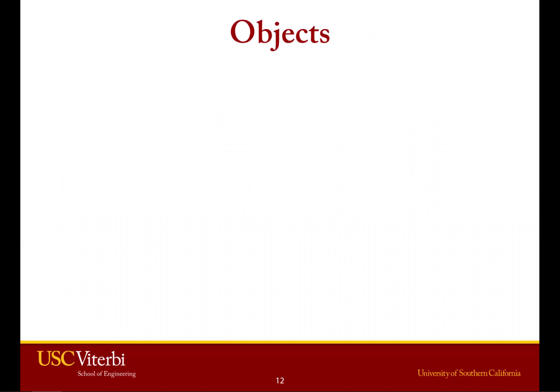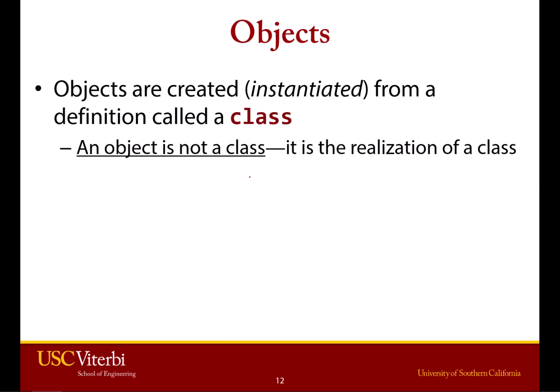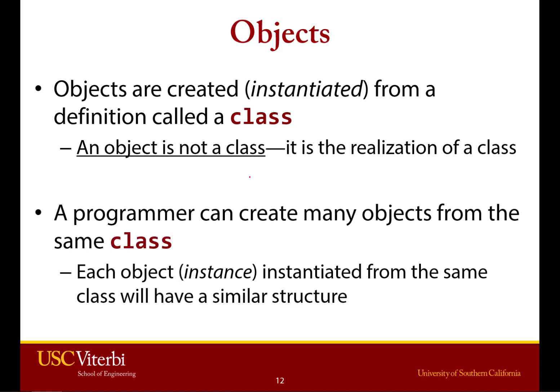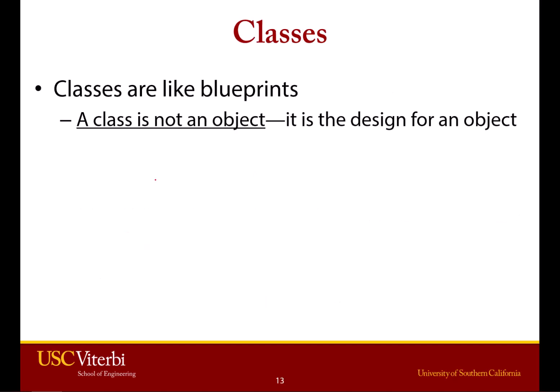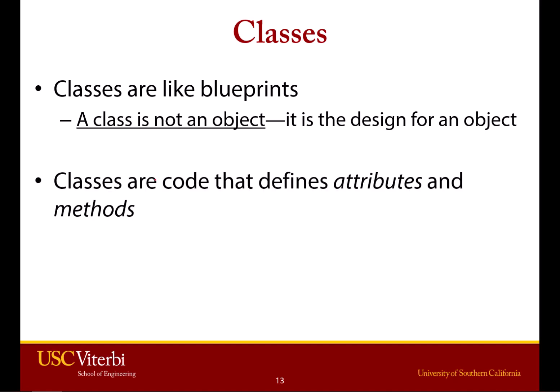How does this translate into actual software? In Python, we say that an object is instantiated from a class. That just means an object is what we call the realization, or real-world example, of a class. Programmers can create many objects from a class, and each object — or what we call an instance — will have the same general structure because it's all built on the same class. You can think of a class like a blueprint. The class is not an object; it is the design for an object — the blueprint that sets up what the attributes and behaviors, or methods, are.